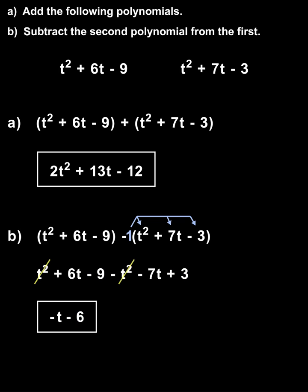So we have negative t minus 6. Make sure to distribute the negative 1 through the parentheses when subtracting the second polynomial from the first.